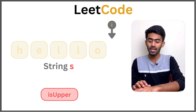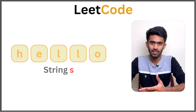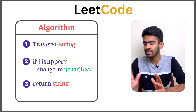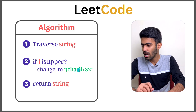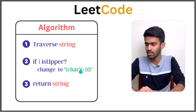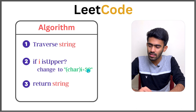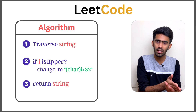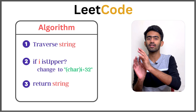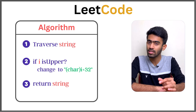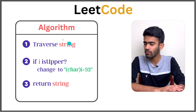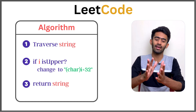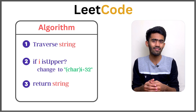This is the algorithm: we traverse the string, check each letter — if its ASCII value is in the range 65 to 90, we add 32 to convert it to lowercase. Otherwise we leave it as is, and finally return the string. This is a basic and easy concept. This can also be done using a built-in Java method.